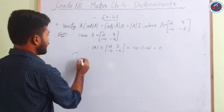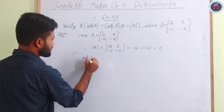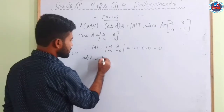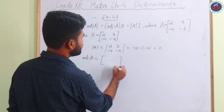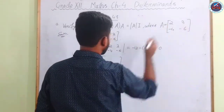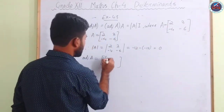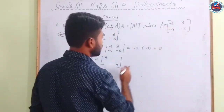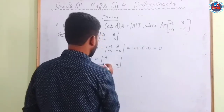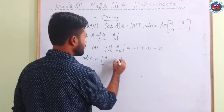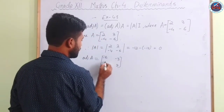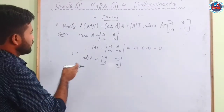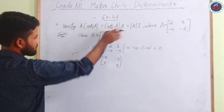Since A is a 2×2 matrix, we use the shortcut: adj(A) is obtained by interchanging 2 and −6, giving −6 and 2 on the diagonal, and changing signs of the remaining elements, giving −3 and 4. So adj(A) = [[−6, −3],[4, 2]].